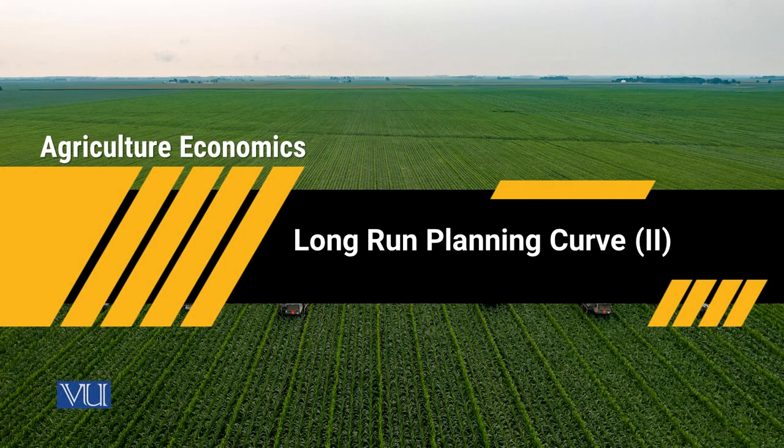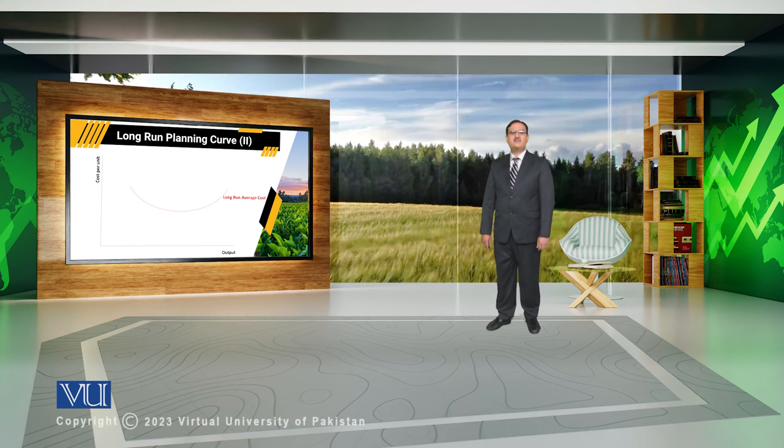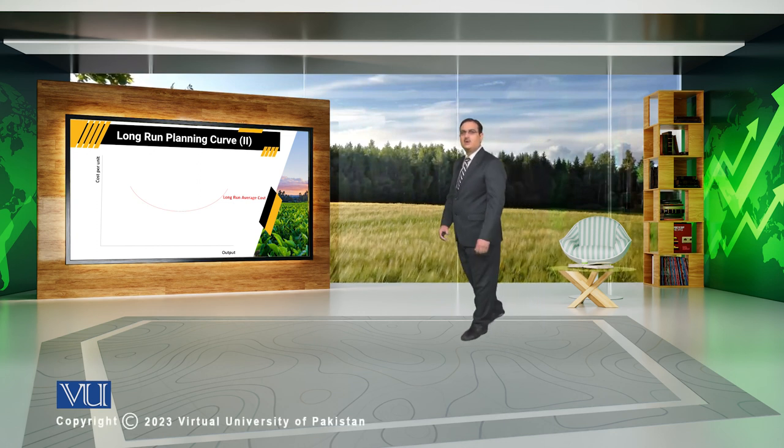Long run planning curve 2. जब हमने long run planning curve की बात की तो हमने वहाँ पर observe किया था कि long run planning curve is a U-shaped curve — it first decreases, which is at a minimum point, then it starts increasing.